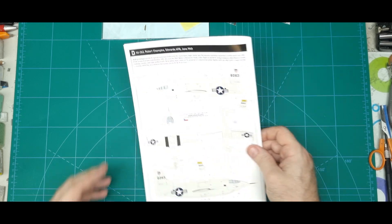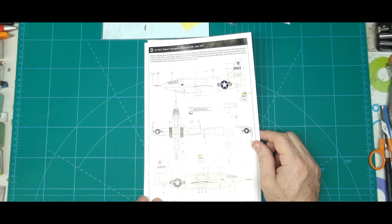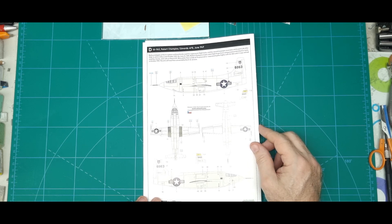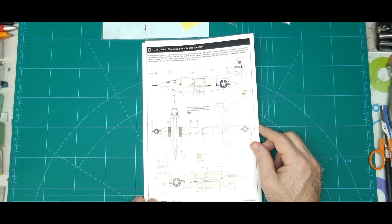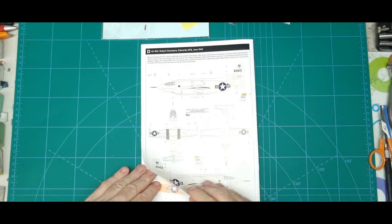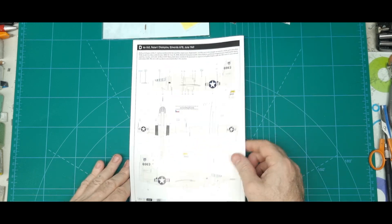And the last one is a white scheme, which is also a bit different. Robert Champagne, Edwards Air Force Base, 1949. Again, nice scheme in the white as well.